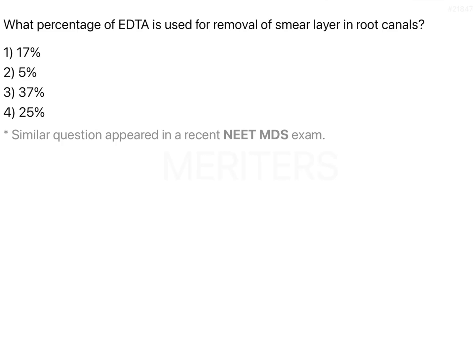What happens is that dentine is necrosed or not viable and it has to be removed. If you don't remove that dentine, it is going to be creating a nidus for secondary infection. And that is why you remove the surrounding circumpulpal dentine.